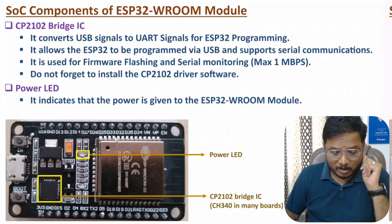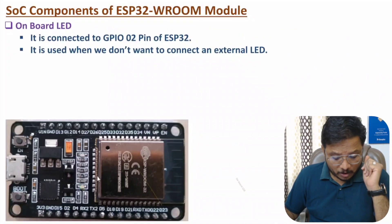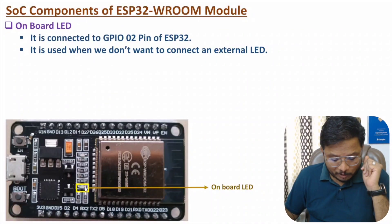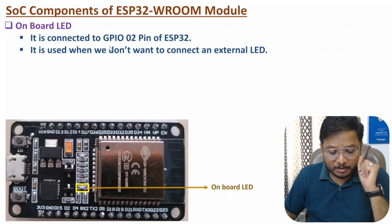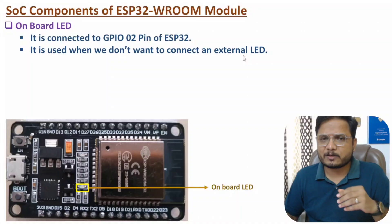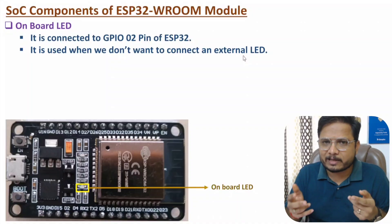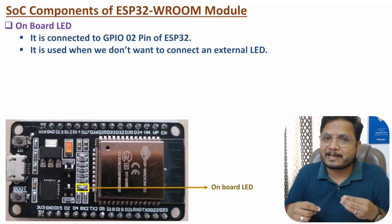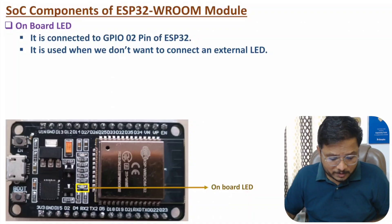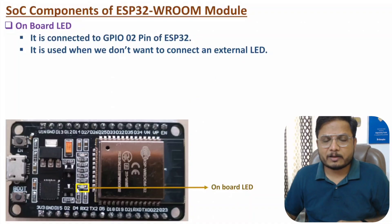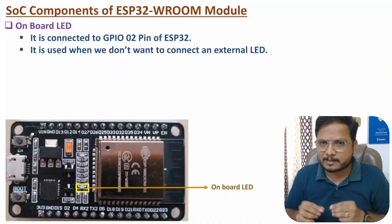Now let me discuss about the last SoC component, that is the on-board LED. This on-board LED is connected to GPIO02 pin of ESP32. We use it when we don't want to connect an external LED — since an on-module LED is available, you can use it to indicate something is on or off.